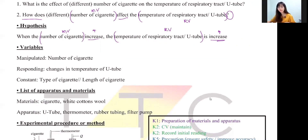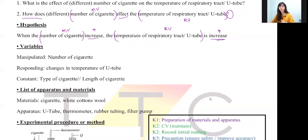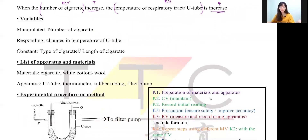For the manipulated variable, write the number of cigarettes; for the responding variable, write the temperature of the U-tube. For the constant variable, you can write the type of cigarette used and the length of the cigarette — please don't write the brand of the cigarette. For apparatus and materials, you have: cigarette, white cotton wool, U-tube, thermometer, rubber tube, and a pump. You can write apparatus and materials together or separately.